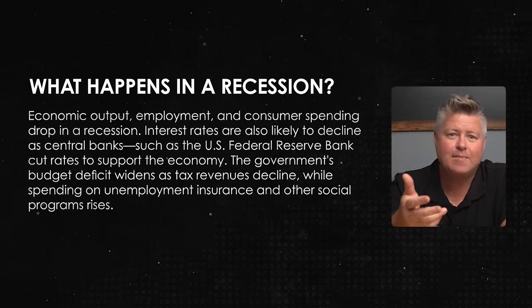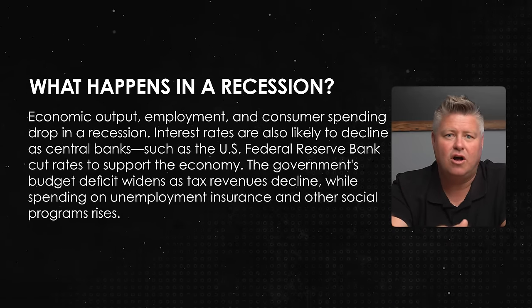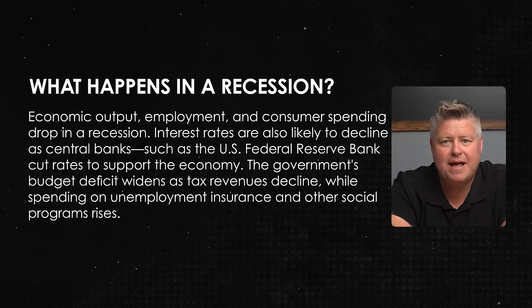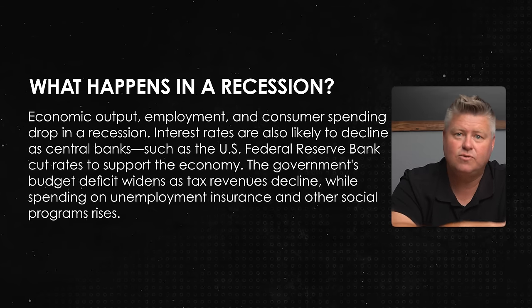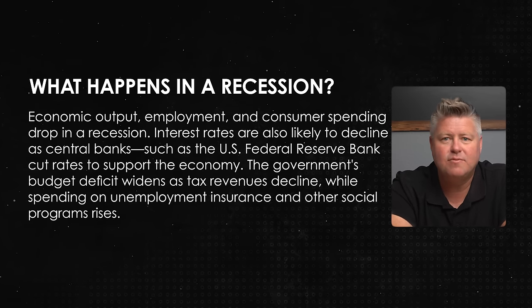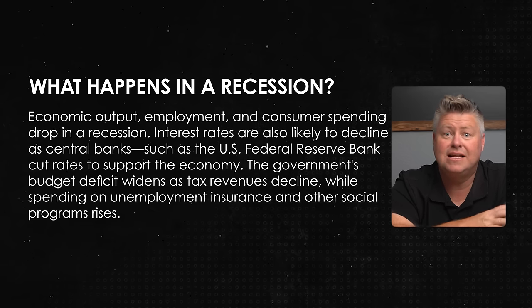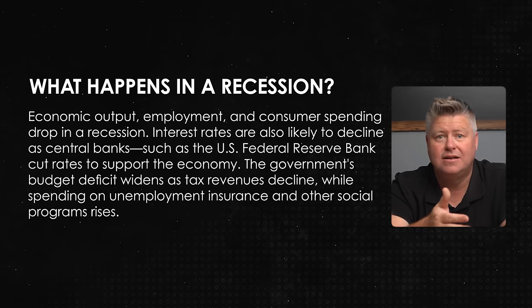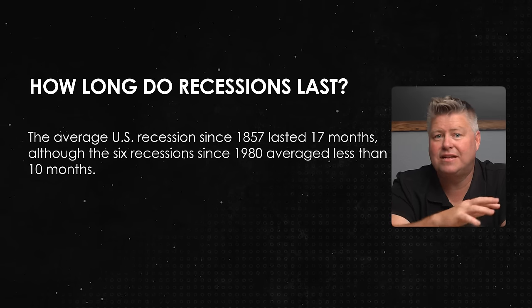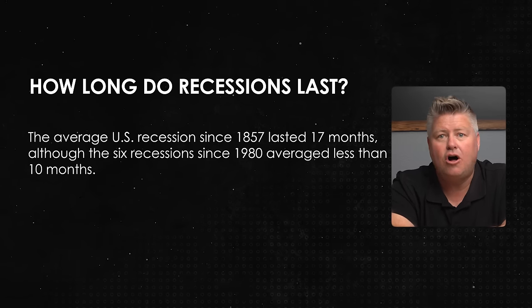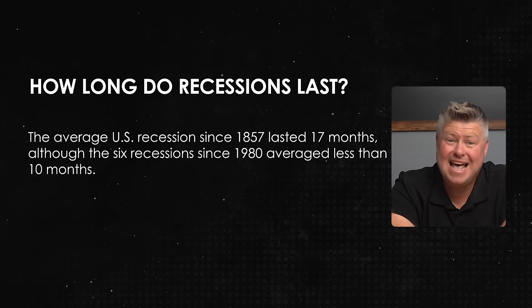What happens in a recession? Economic output, employment, and consumer spending drop. Interest rates are also likely to decline as central banks cut rates to support the economy. The government's budget deficit widens, tax revenues decline, while spending on unemployment insurance and other social programs rises. The average US recession since 1857 lasted 17 months, although the six recessions since 1980 averaged less than 10 months.